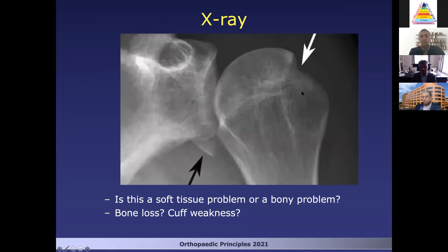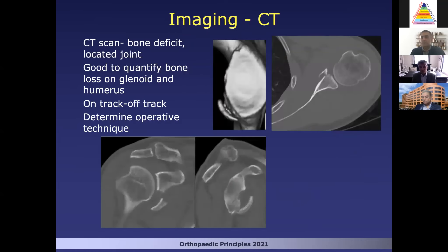Once you've identified this, you really want to think about: is this a bony problem or is it just a soft tissue problem? Because if it's a bony problem, our decision-making for imaging is going to change, and I will lean more towards a CT scan if I think there's more bony damage. What a CT scan does is helps us to quantify the amount of bone in a situation where you can't get a good axillary view. It can tell us whether the joint is located or not, but really when you have bone loss, you want to be able to quantify it — this tells us whether we need a remplissage, an arthroscopic Bankart, an open shift with ORIF for the glenoid, or whether we need to jump to a Latarjet. The CT scan can give us a lot of this information.